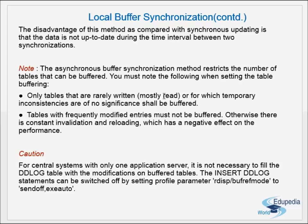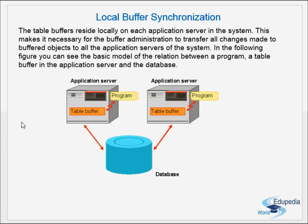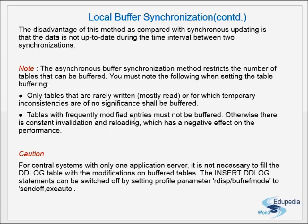Tables with frequently modified entries must not be buffered; otherwise there is constant invalidation and reloading, which has a negative effect on performance. If a table is being updated every minute, every change causes other application servers to flush their buffers and reload from the database. This defeats the purpose of buffering entirely. That is why only tables with less than one percent modification rate are candidates for buffering.